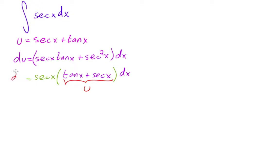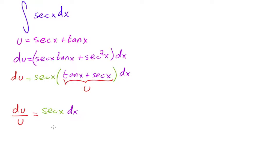So I have du, and du is equal to secant x times u times dx. If you divide by u on the left side, you get du over u. On the right side, you get secant x dx. So secant x dx equals du over u when u equals secant x plus tan x.